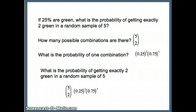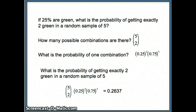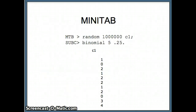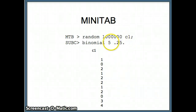So 0.2637 is our theoretical probability. With 25% green, the probability of getting exactly two out of five should be 0.2637. We want to check that — one good way is to run a simulation. We'll go to Minitab, where I have a million numbers in C1 from a binomial distribution with five trials and probability of success 0.25.